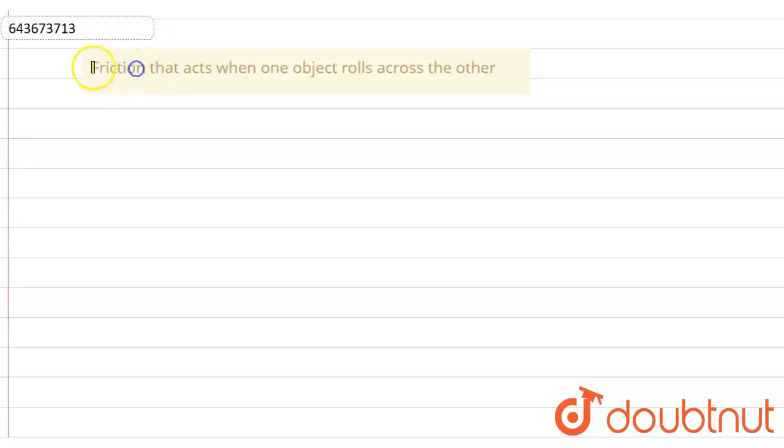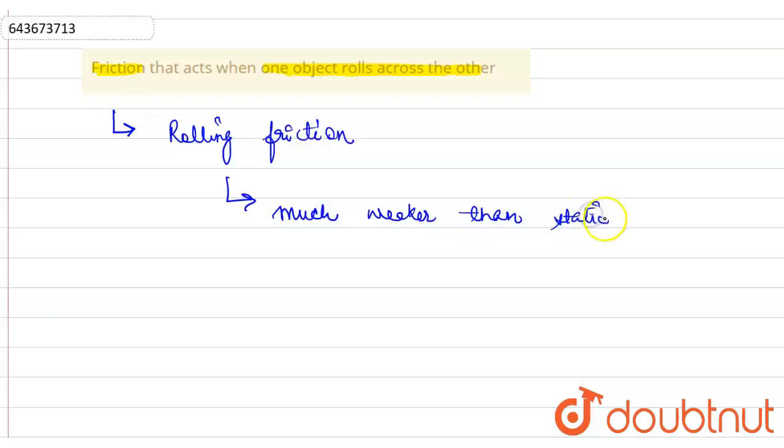Friction that acts when one object rolls across another object. This friction is called rolling friction, and it is much weaker than static friction and also sliding friction.